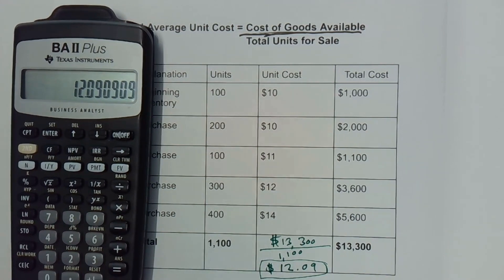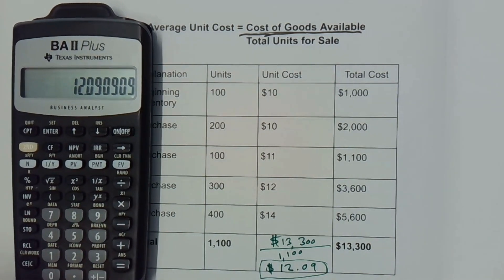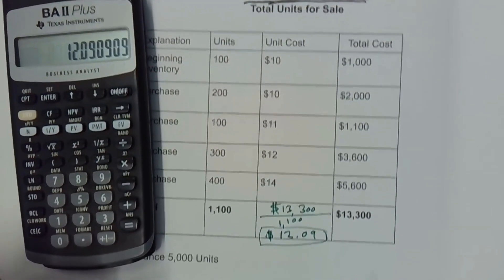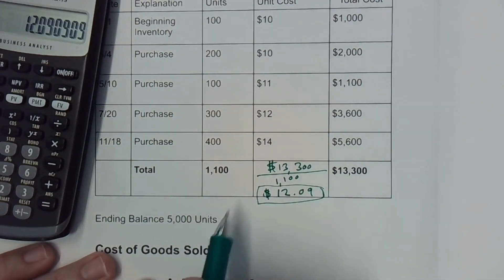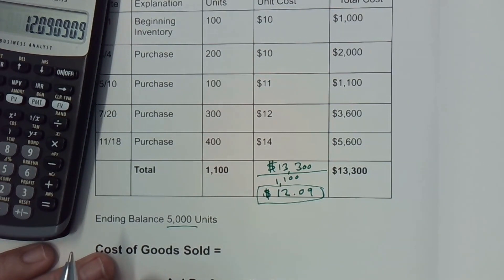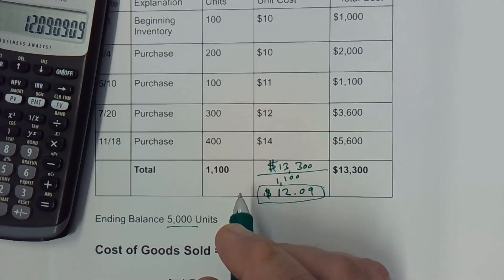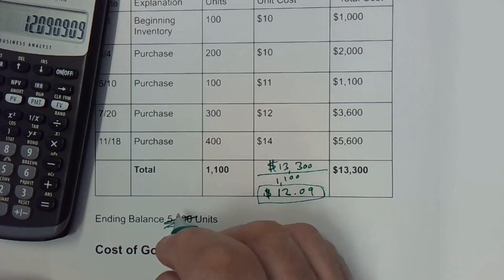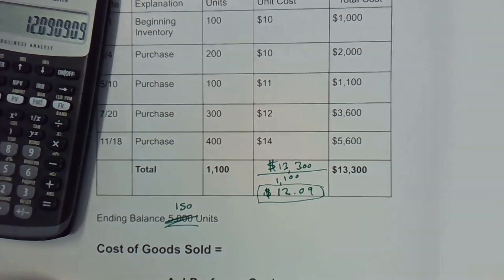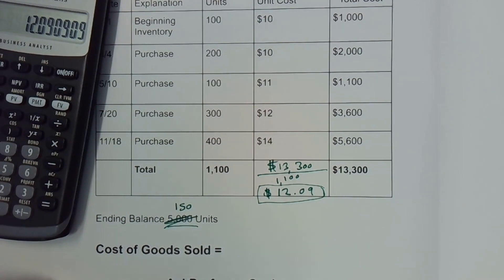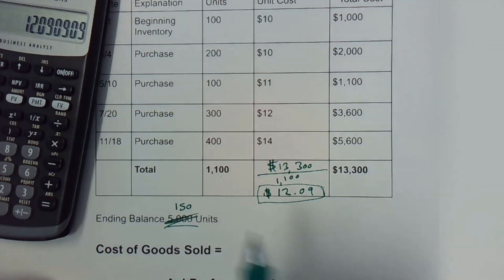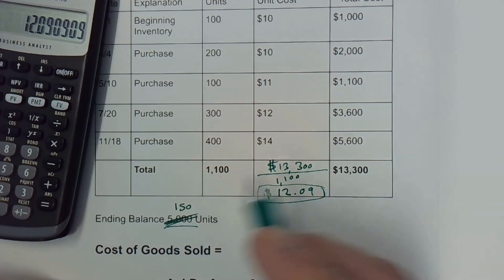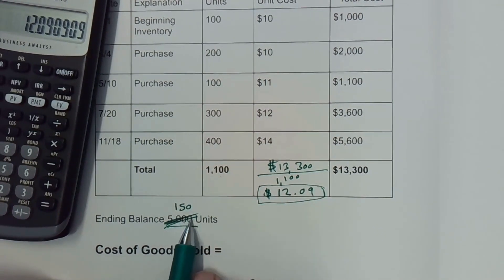But we're not done — it was asking for the cost of goods sold, which is how much the units we sold worked out to be. We didn't have anything showing us the sales, but we do an inventory at the end of the year and we see there are 150 units left in the warehouse. So that's our ending balance — I made a mistake earlier saying 5,000 units, which wouldn't make sense since we only had 1,100 for sale. So this should be 150 units at the end.